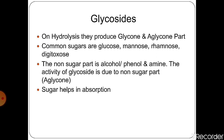Common sugars or glycon part contains glucose, mannose, rhamnose and digitoxose. The non-sugar part contains alcohol or phenol and amide. The activity of glycosides is due to the non-sugar part, that is the aglycon part. The sugar part or glycon part helps in absorption of nutrients from the soil.